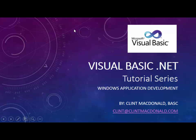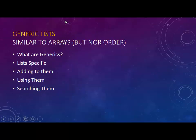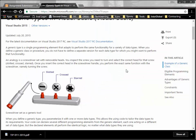So what we have is generic lists. You probably want to do a bit of Googling on generics, but generics are a way for programming languages to perform similar or exact same tasks using different data types and different varieties of objects. According to Microsoft MSDN, a generic type is a single programming element that adapts to perform the same functionality for different variety types.